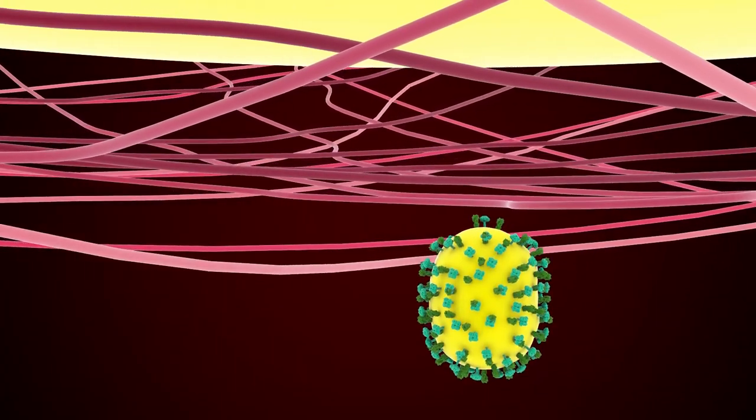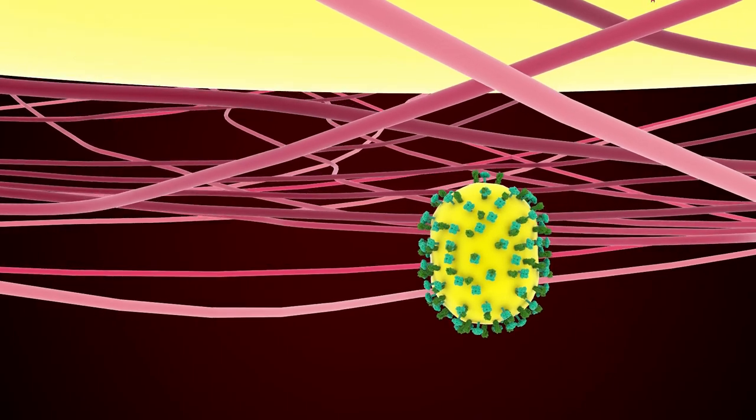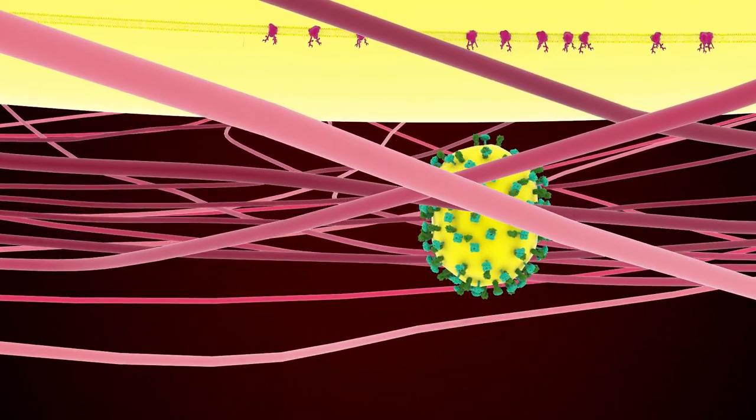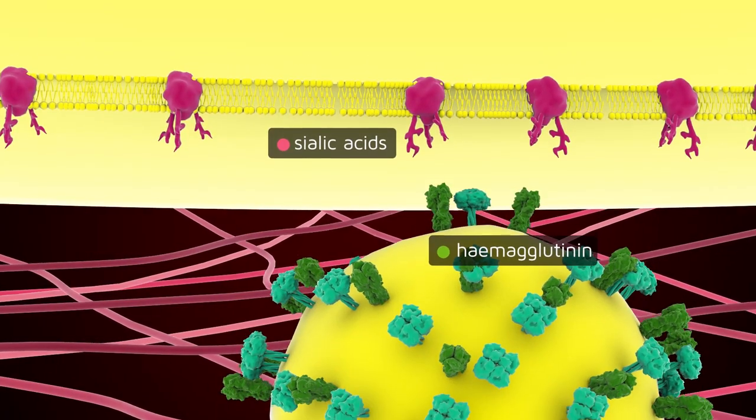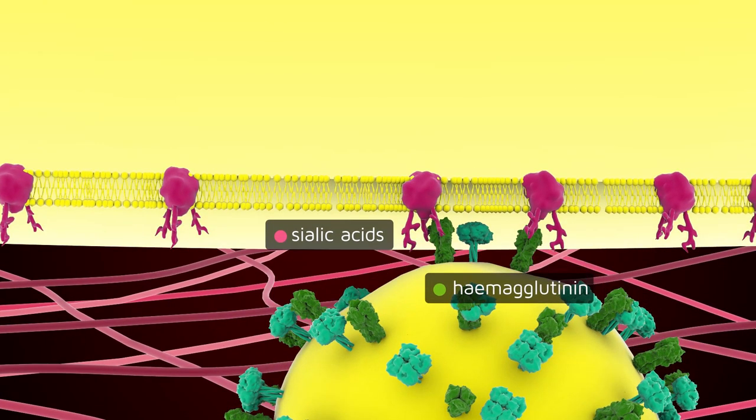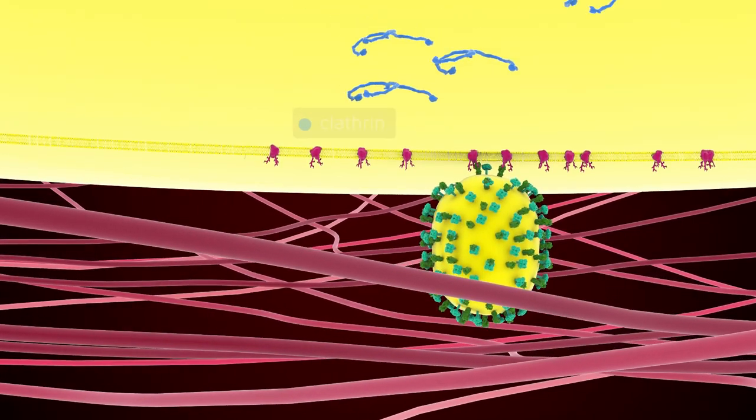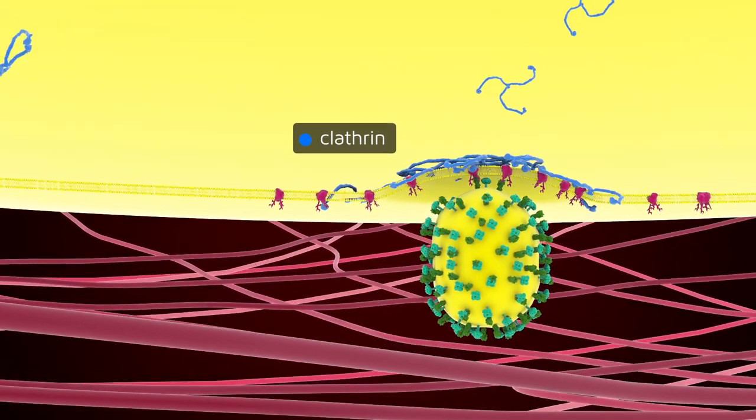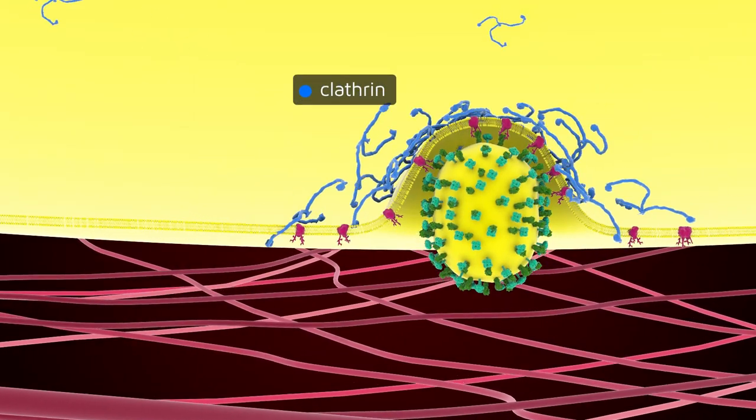Viruses are simple biological compounds that need to infect cells to replicate. Influenza virus first interacts via its hemagglutinins with sialic acids anchored to the surface of the respiratory epithelial cells. This interaction initiates virus entry into the targeted cell by endocytosis.